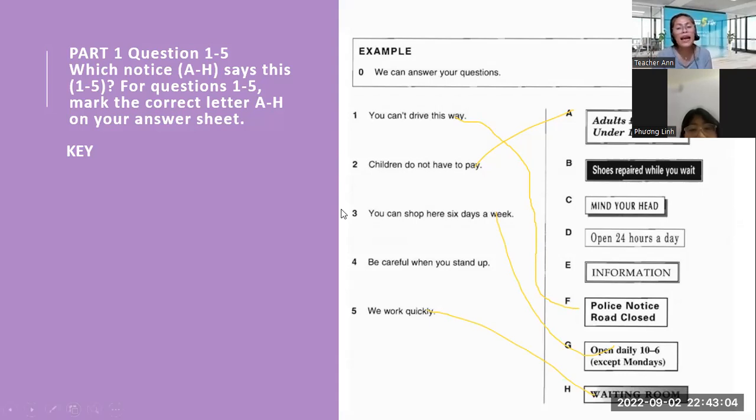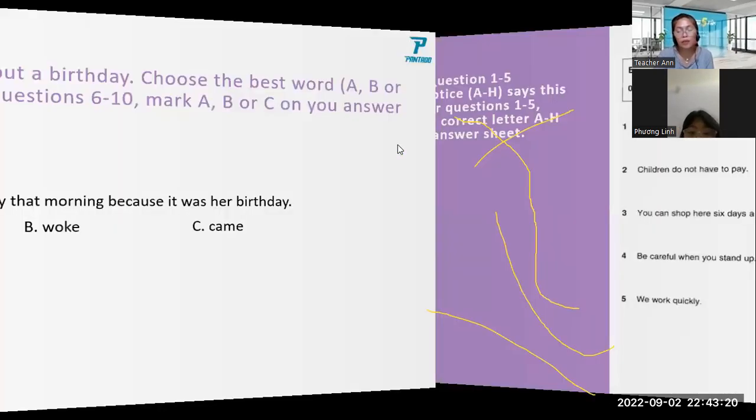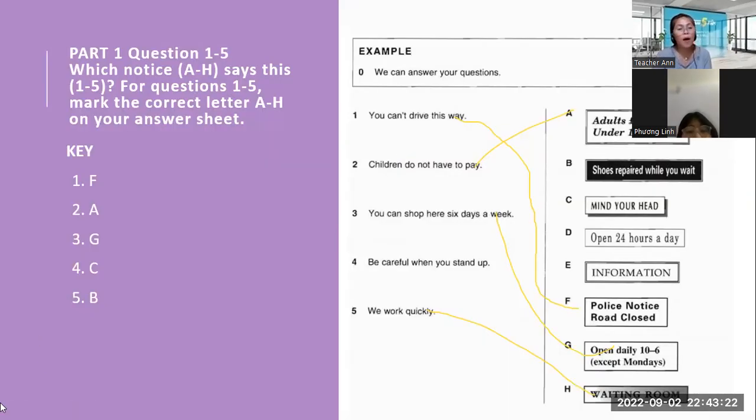Number one, you can't drive this way. Okay, what is your answer? It is not police, not closed. Okay, sorry. Okay, number one answer is letter F. Let me see. Okay. Next.